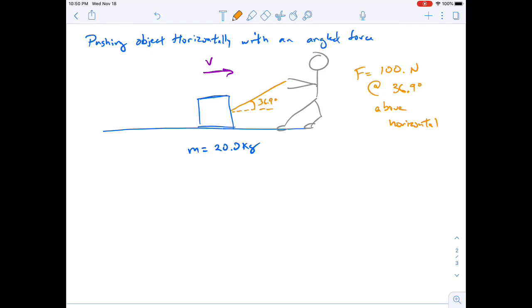Here we have a situation where a person is pulling a mass, pulling a box. They have a rope or string, and they're pulling on the box sideways, trying to move this object to the right. They're pulling with a force of 100 newtons, and this angle is 36.9 degrees above the horizontal.